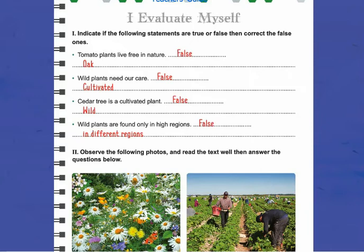Our first lesson was about wild and cultivated plants. We are going to study together and evaluate ourselves on the first lesson. These sentences are given here and we are going to state if they are true or false and correct the false ones.